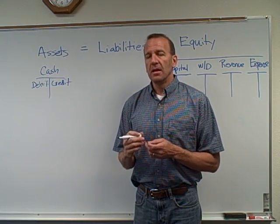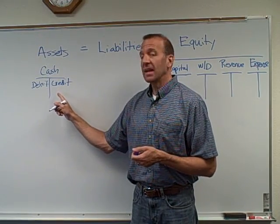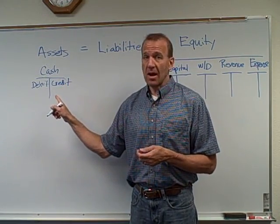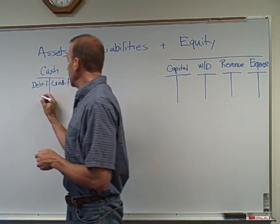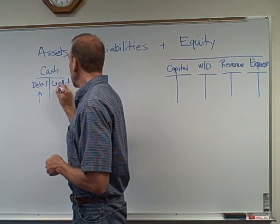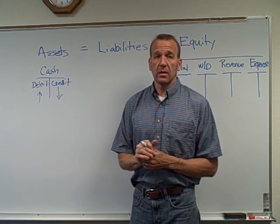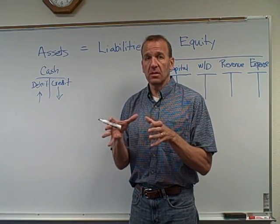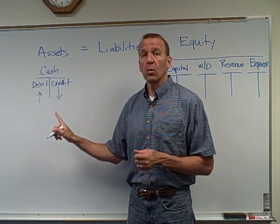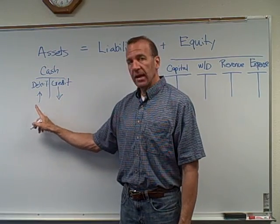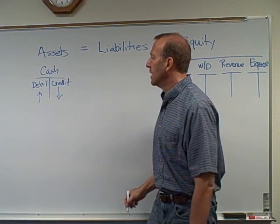Debit means to the left; credit means to the right — as simple as that. Students often think of this backwards, thinking an asset would increase with a credit — that is not correct. You need to know that an asset increases with a debit and decreases with a credit. That's how all asset accounts work. There are things called contra assets we'll cover later, but for now, pure asset accounts increase with debits and decrease with credits.